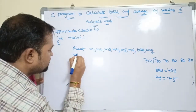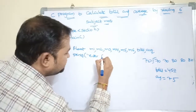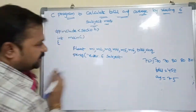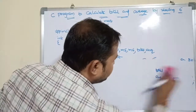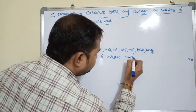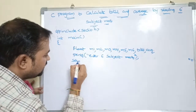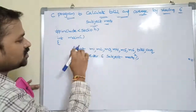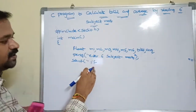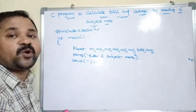So let us write a printf statement: printf("Enter 6 subject marks"). Next is scanf. Here the format specifier for float is %f. F stands for float. It specifies that we are entering a floating point number.